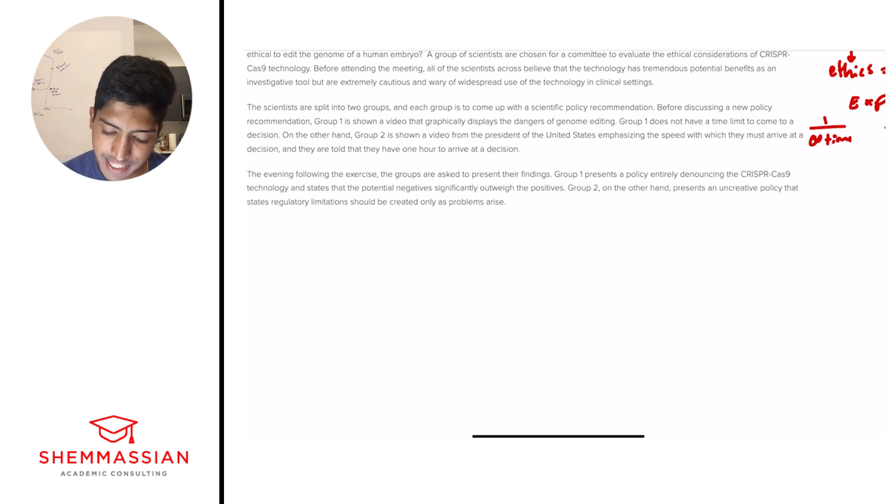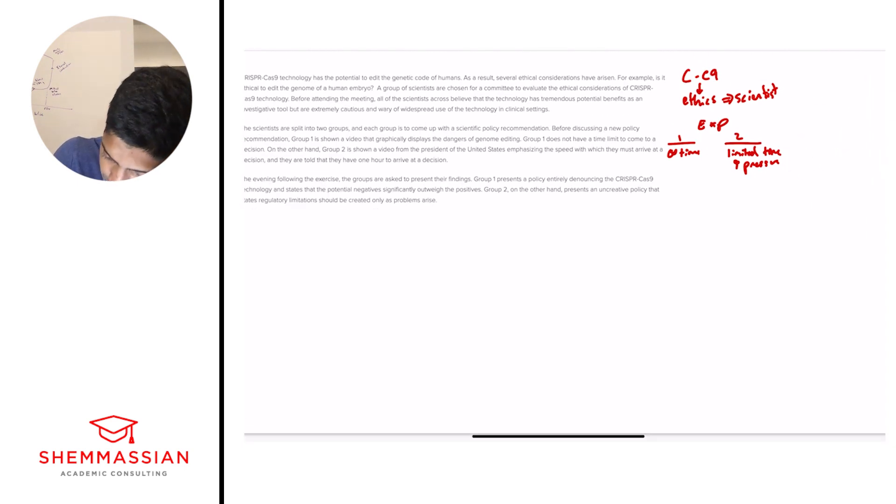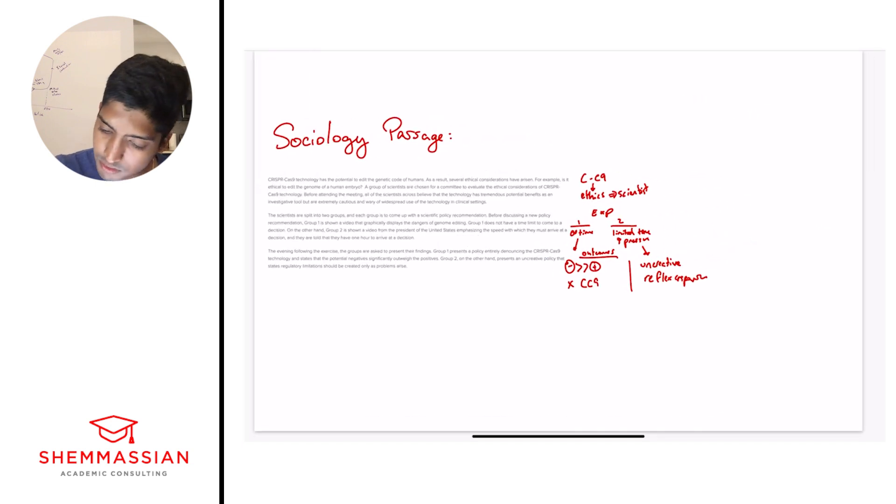The evening following the exercise, the groups are asked to present their findings. Group one presents a policy entirely denouncing the CRISPR-Cas9 technology, and states that potential negatives significantly outweigh the positives. Group two, on the other hand, presents an uncreative policy that states regulatory limitations should be only created as problems rise. So we're going to write outcomes. Group one says negatives significantly are outweighing the positives. X CRISPR-Cas9. And two is saying uncreative reflex response or something like that. So something quick, simple, that makes sense to you. And so with that, we're ready to go on to our questions.